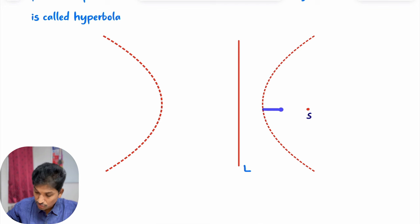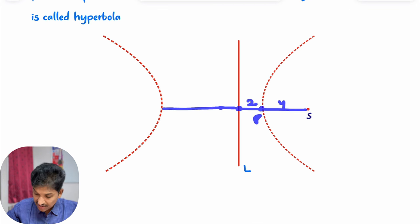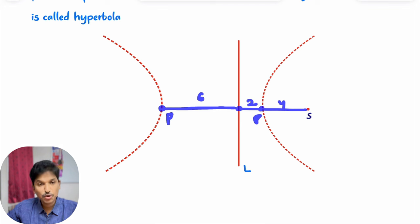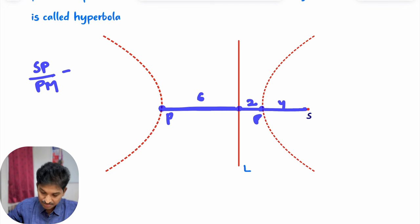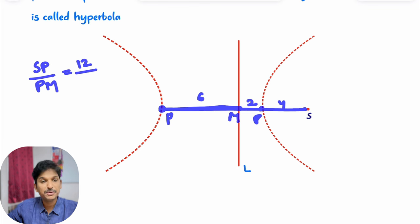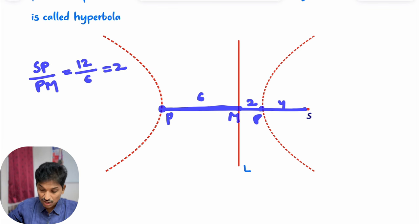As we are discussing an example — SP is 4, PM is 2. Now observe here: I will consider this length as 6. Suppose I take this point as P. SP divided by PM — SP is 6 plus 2 plus 4, that is 12. SP is 12, divided by PM. The distance from this point to the fixed line PM is 6. So SP by PM is 2. We get another point here which also satisfies the same condition.